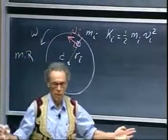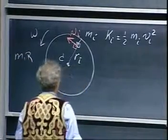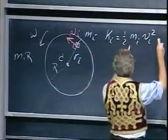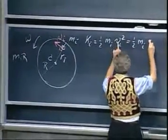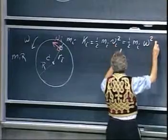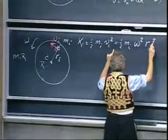Now, v equals omega r. That always holds for these rotating objects. And so I prefer to write this as one-half m of i omega squared r of i squared.